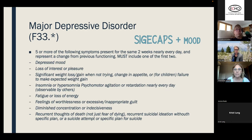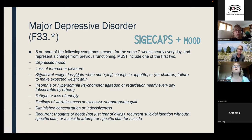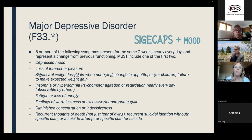C is concentration — in older kids it may look like indecisiveness or worsening organization. A is appetite — for kids who are growing, I ask whether their clothes are fitting the same as a month or two ago, since they may be losing or gaining weight without trying. For younger kids, not gaining as expected on the growth chart can also count. P is psychomotor changes — either agitation or retardation.